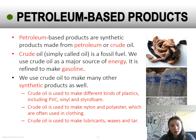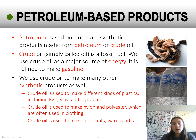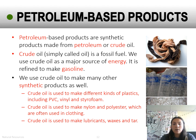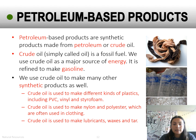Petroleum-based products are synthetic products made from petroleum or crude oil. Crude oil is also simply called oil — it's a fossil fuel and a major source of energy, refined to make gasoline. We also use crude oil to make many other synthetic products. Three examples are given, but you only need to provide one: crude oil is used to make different kinds of plastics including PVC, vinyl, and styrofoam; it is used to make nylon and polyester, often used in clothing; and it is used to make lubricants, waxes, and tar.